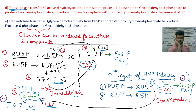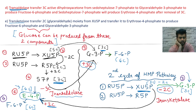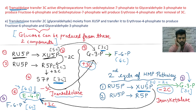Glucose can be produced from fructose-6-phosphate and glyceraldehyde-3-phosphate by reversal of glycolysis steps. The breakdown of glucose is glycolysis; the reversal is gluconeogenesis, which is the formation of glucose. We will study gluconeogenesis in a later lecture.